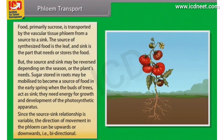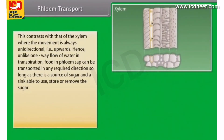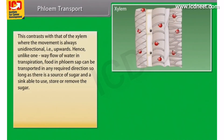Since the source-sink relationship is variable, the direction of movement in the phloem can be upwards or downwards, which means bi-directional. This contrasts with the xylem, where movement is always unidirectional, meaning upwards. Hence, unlike the one-way flow of water in transpiration, food and phloem sap can be transported in any required direction, so long as there is a source of sugar and a sink able to use, store, or remove the sugar.